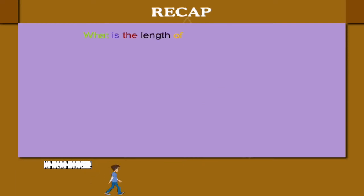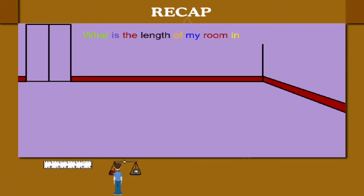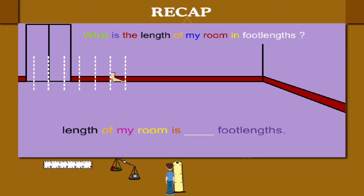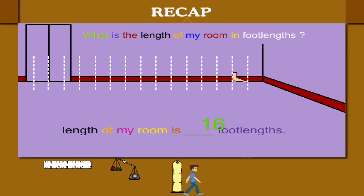Now, what is the length of my room in foot lengths? Let's measure. The length of my room is 16 foot lengths.